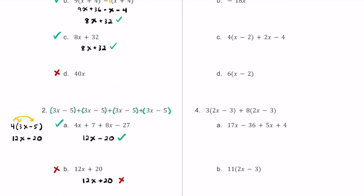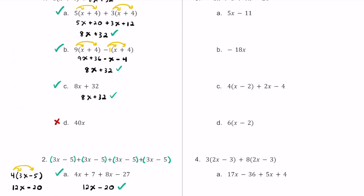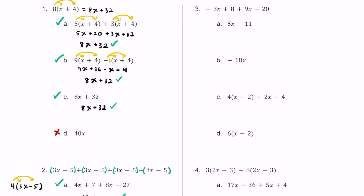Let's check out number 3. We have the expression of negative 3x plus 8 plus 9x minus 20. Let's simplify by combining like terms. Negative 3x plus 9x is 6x. Then combining positive 8 and negative 20 gives negative 12. So we can write 6x minus 12.